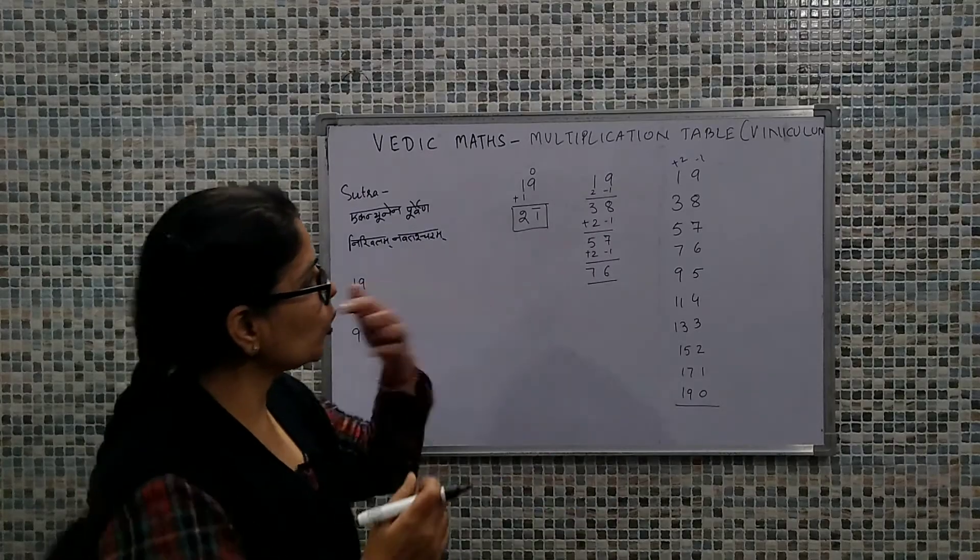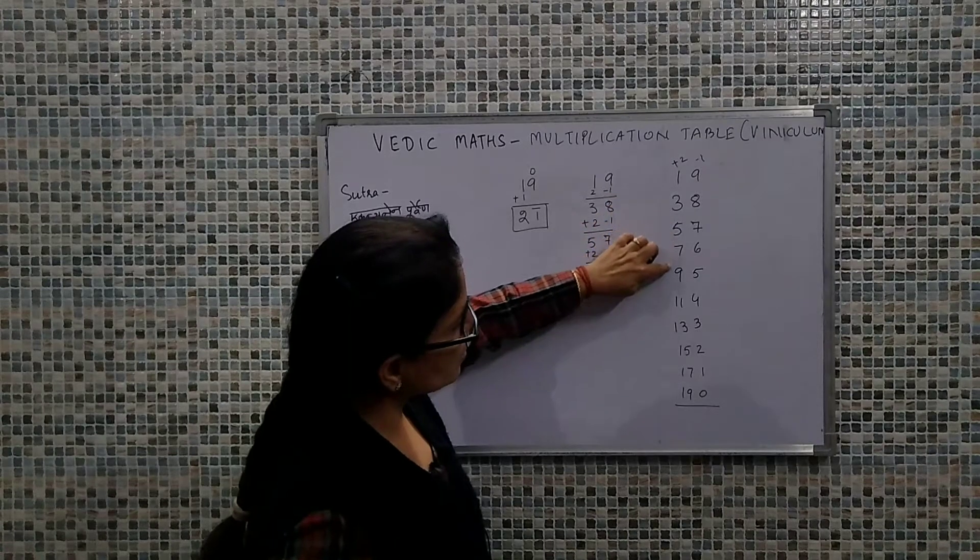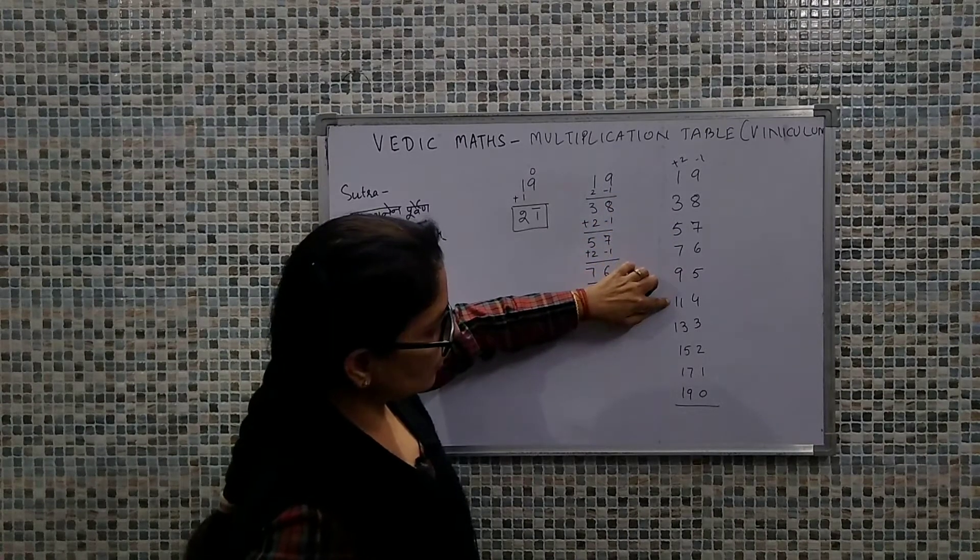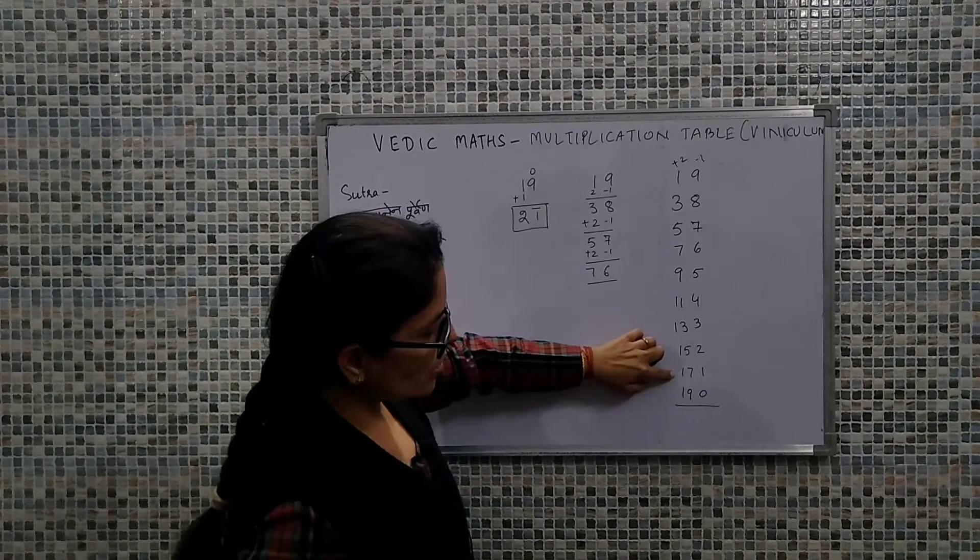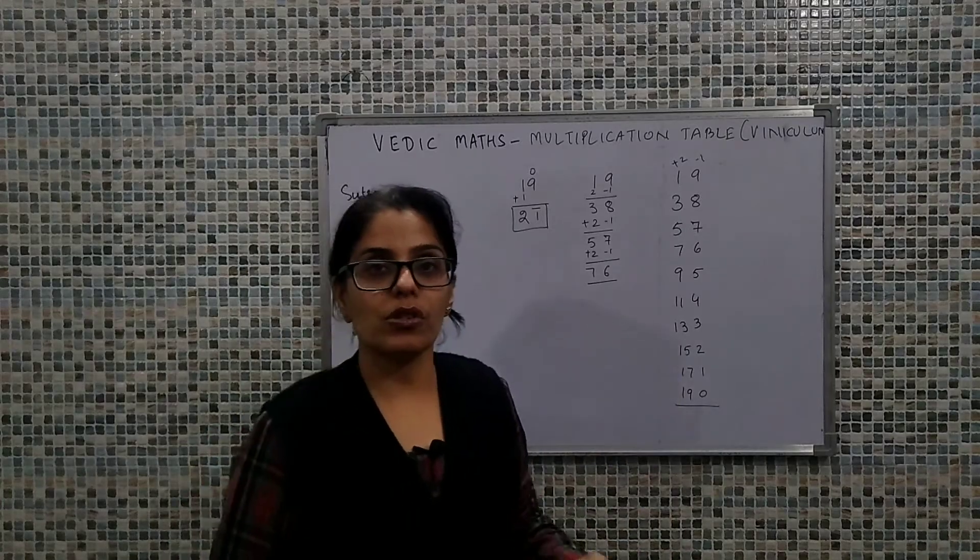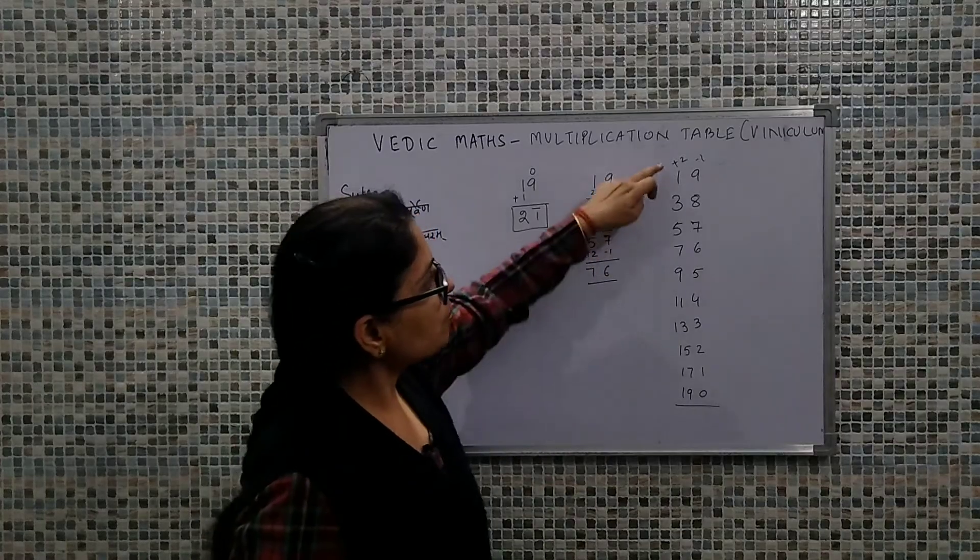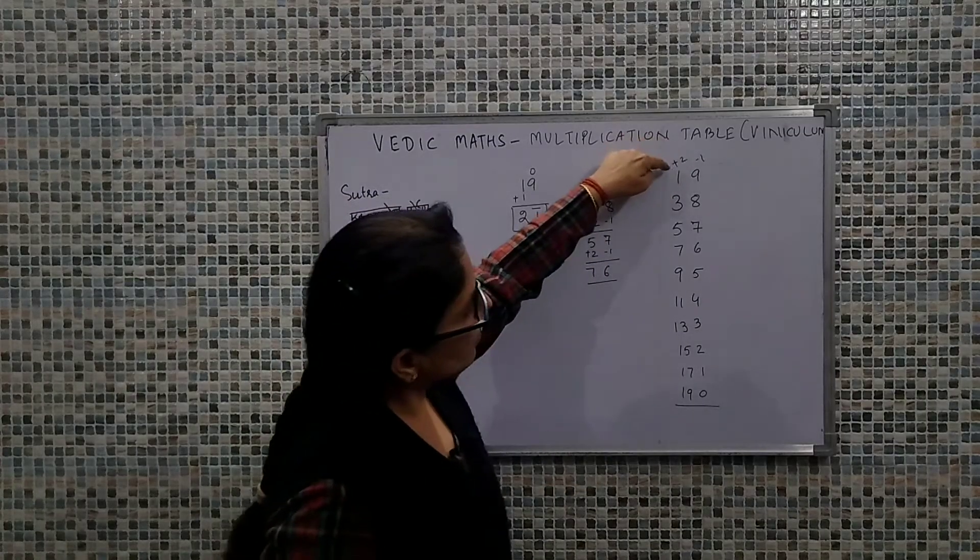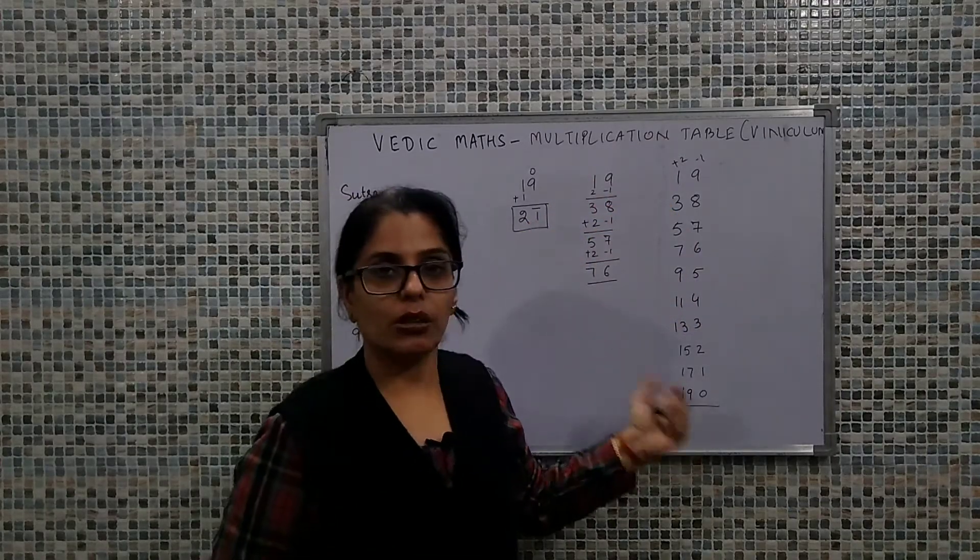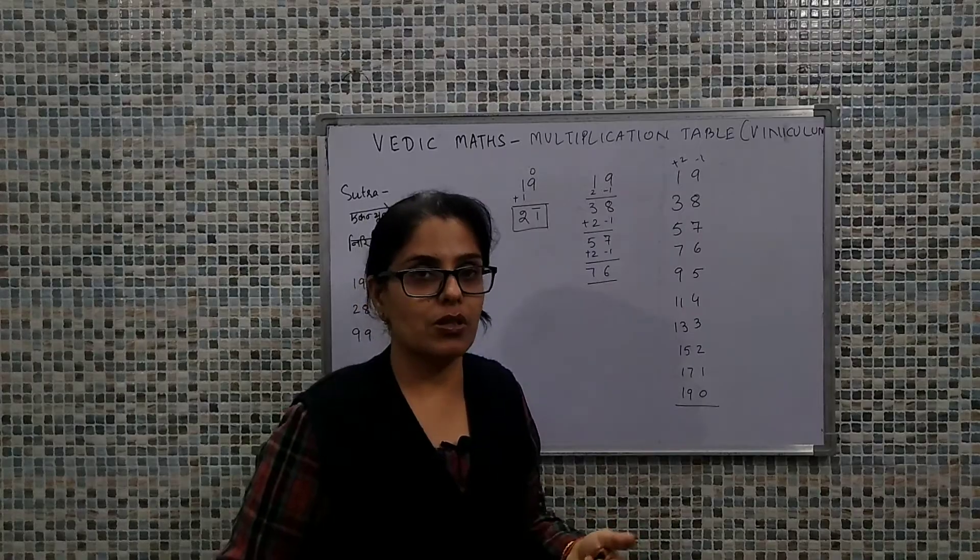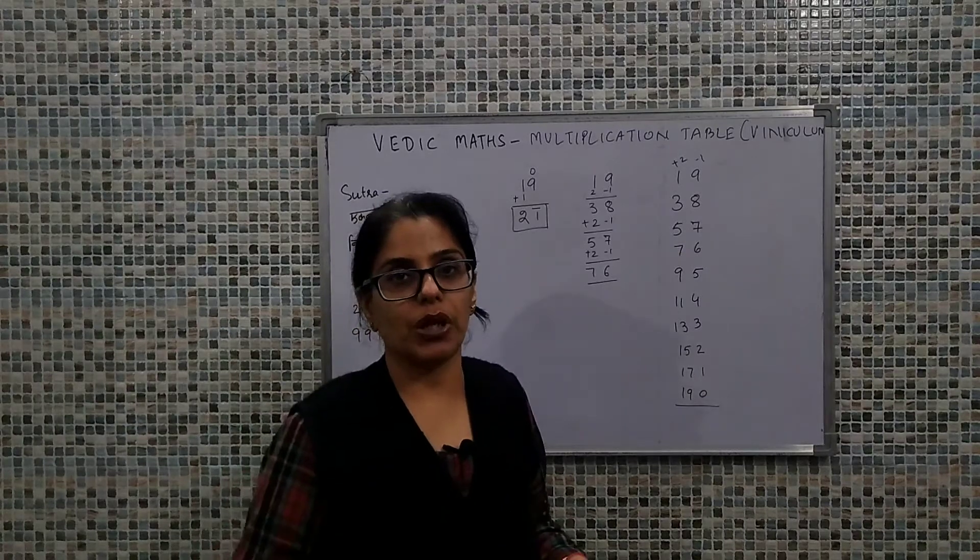So if we go with the normal way: 19 ones are 19, 19 twos are 38, 19 threes are 57, 19 fours are 76, 19 fives are 95, 19 sixes are 114, 19 sevens are 133, 19 eights are 152, 19 nines are 171, and 19 tens are 190. So this is how we get the multiplication table. What's the best part? We simply did minus 1 in the ones place value and plus 2 in the tens place value. This is how we can get the multiplication by using the concept of viniculum with the basic arithmetic operations of addition and subtraction.